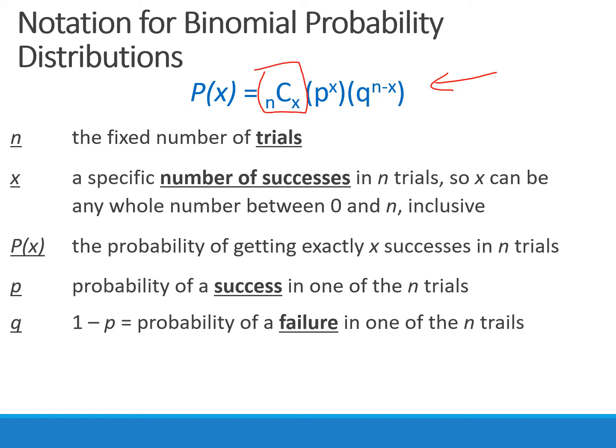Note, we have a combination to start the problem. Then we have p, which is the probability of success, raised to some exponent, followed by q, the probability of failure, raised to another exponent. Both of these exponents here are x and then n minus x. If we add those together, it's gonna total n, and n is the number of trials we have in our experiment.